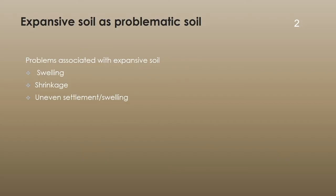So far we have learned that expansive soil is a problematic soil. The problems associated with expansive soil arise because of its swelling characteristics, shrinkage, and uneven settlement or swelling. When an expansive soil absorbs moisture, the water content of the soil will increase and that will lead to swelling. Similarly, when the water content reduces because of evaporation or evapotranspiration, the volume of the soil will decrease, leading to shrinkage. When swelling and shrinkage take place, there will be heaving and settlement of a structure, and if this becomes non-uniform, it will lead to damage.